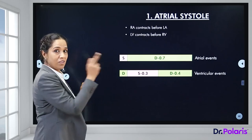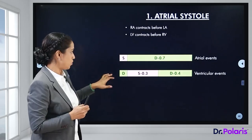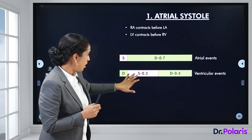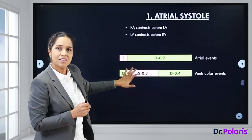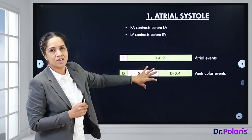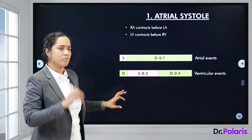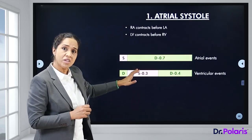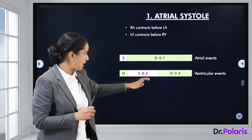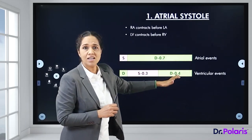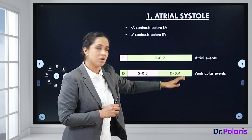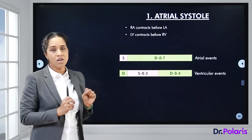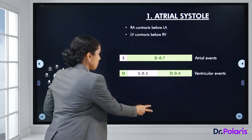For the ventricular events, systole and diastole take almost the same time — systole takes 0.3 seconds and ventricular diastole takes about 0.4 to 0.5 seconds.